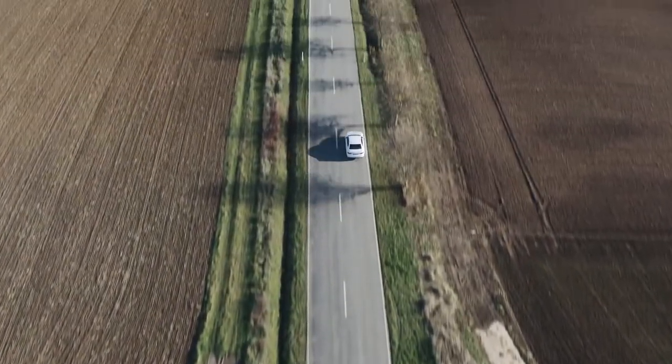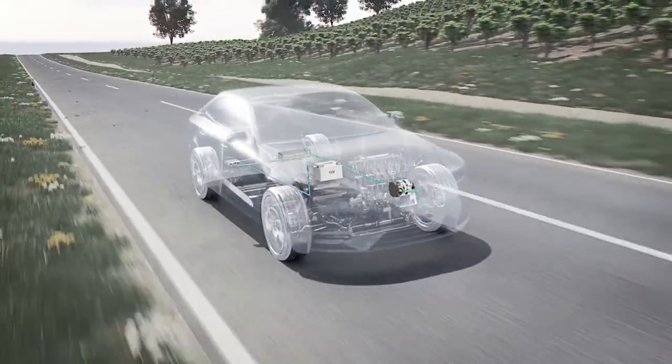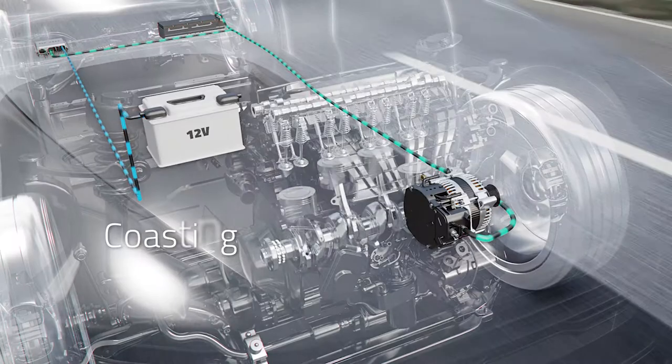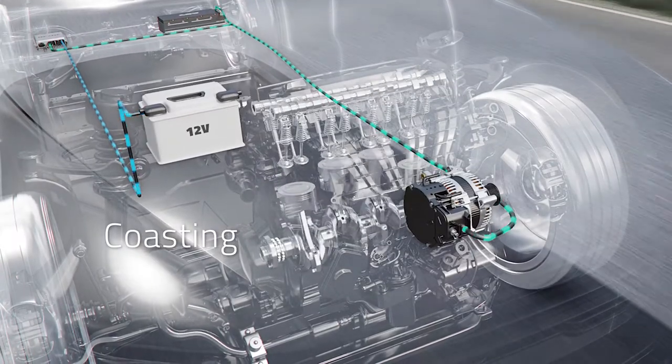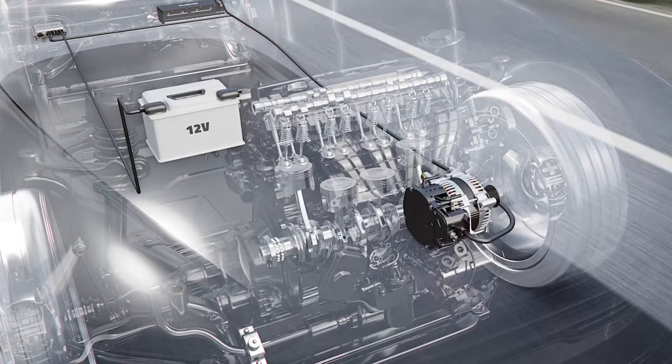While driving at a constant speed, the driver can take their foot off the accelerator pedal, switching the automatic transmission into the freewheeling function. The engine shuts off and saves fuel while the speed remains almost constant.